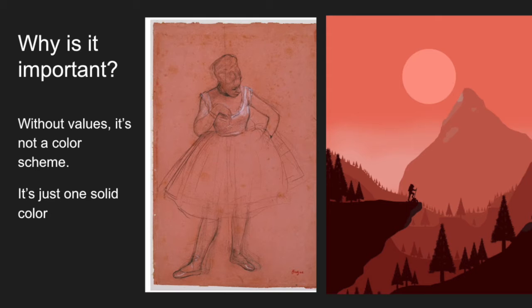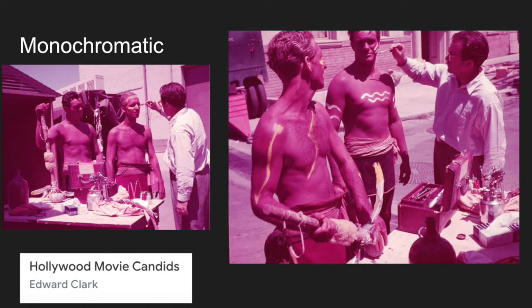It's super important to remember value when we're talking about monochromatic color schemes. So without values, it's not a color scheme. Look at the picture on the right and the left. If you notice the ballet dancer adjusting her costume, it's very flat. And if you notice the landscape on the right, there's lots of different values there making it a color scheme — not just one flat color.